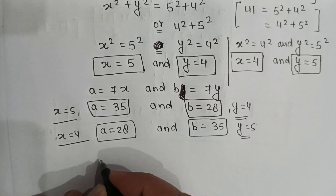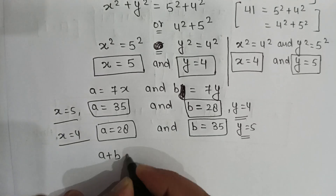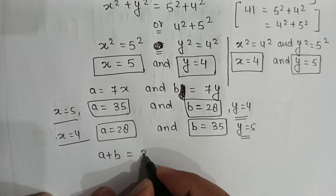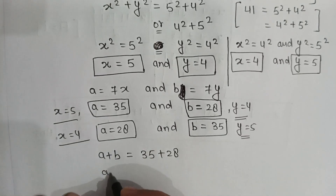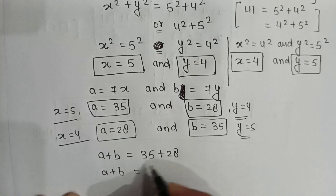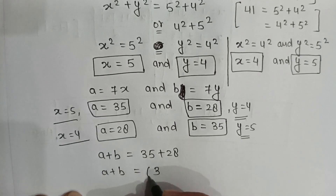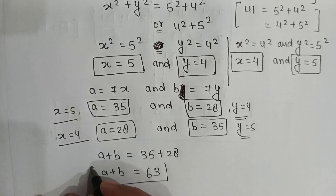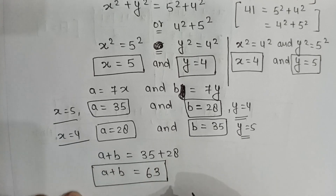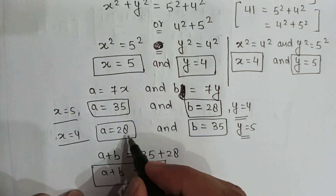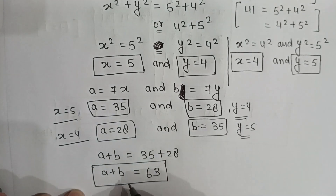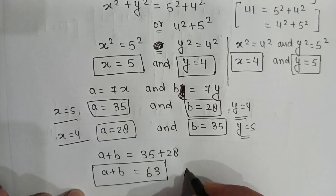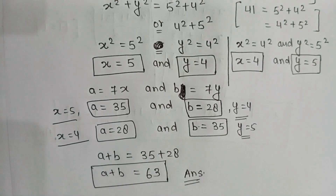We have to find a + b. So a + b = 35 + 28 = 63. Whether we take (35, 28) or (28, 35), the sum is 63. So the value of a + b is 63, and that is our answer. Thank you friends.